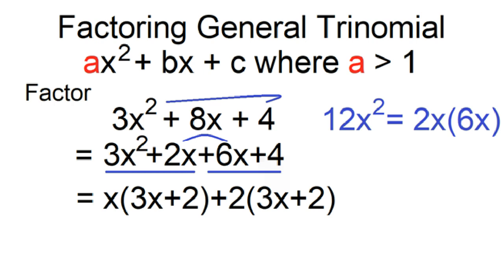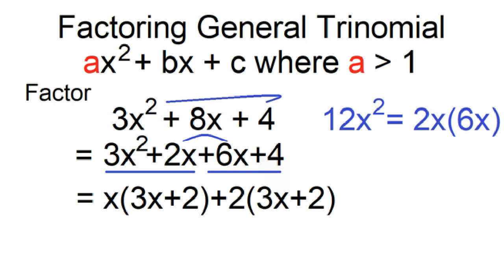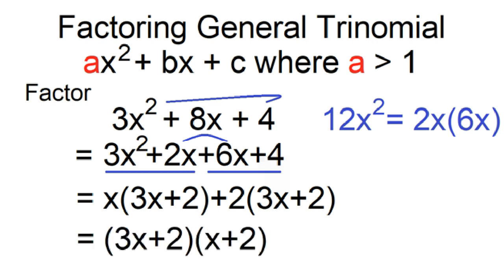Next, factor out the common binomial. The factors of 3x² + 8x + 4 are (3x + 2) and (x + 2).